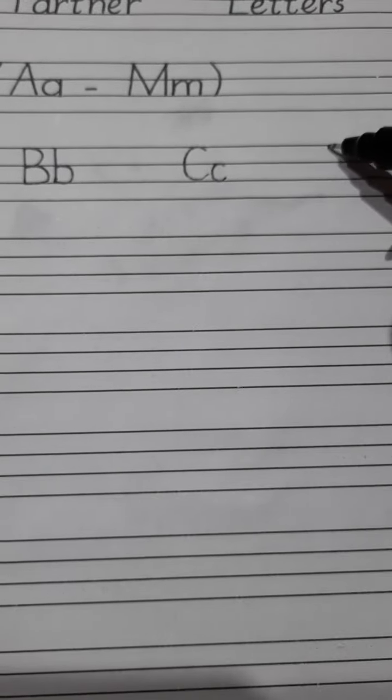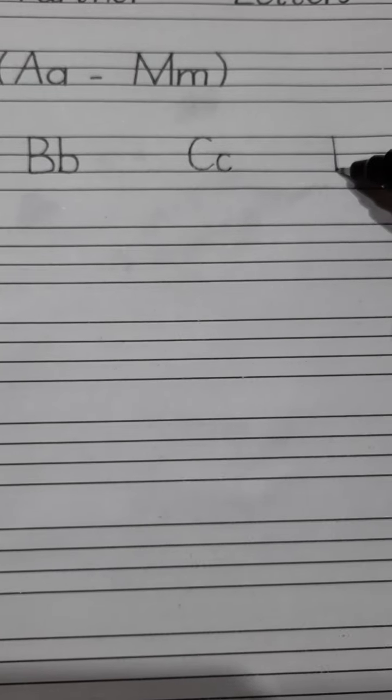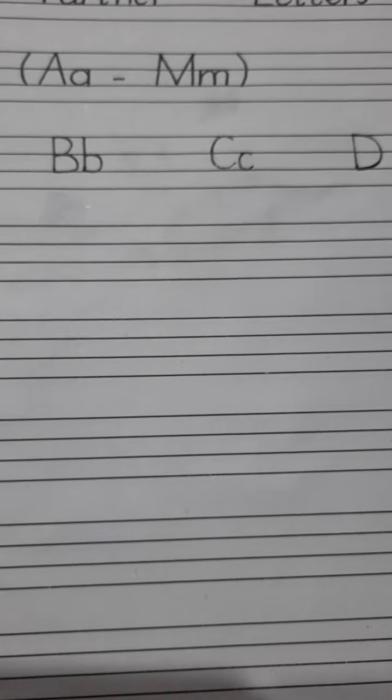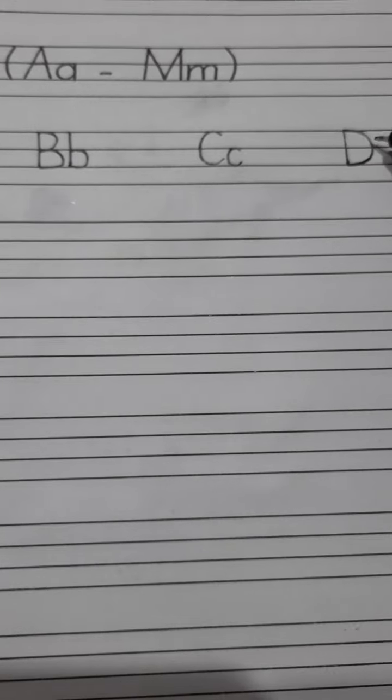D. Put your pencil on this dot and make a standing line with a half circle curve. This is capital D. For small D, you will first make a C curve, then complete it with a standing line.